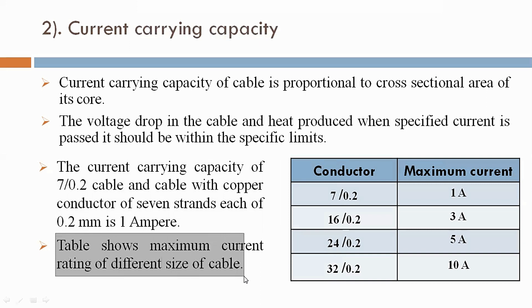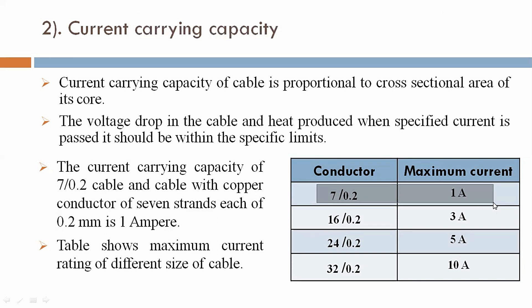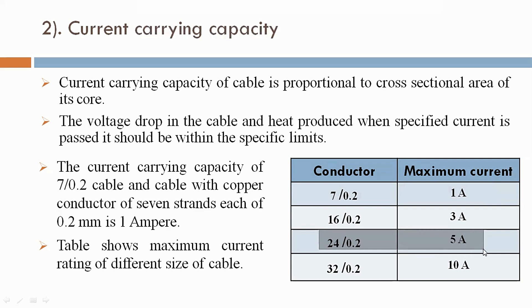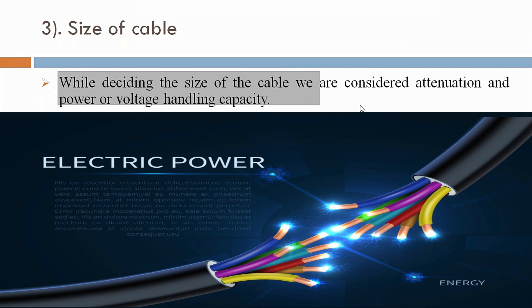The table shows maximum current rating of different sizes of cable. This is the conductor and this is the maximum current rating of that particular conductor. First, 7/0.2 means 7 strands, 7 conductors, and the diameter is 0.2 mm — maximum current is 1 ampere. 16/0.2 has current carrying capacity of 3 ampere. 24/0.2 has maximum current carrying capacity of 5 ampere. 32/0.2 has a current carrying capacity of 20 ampere.